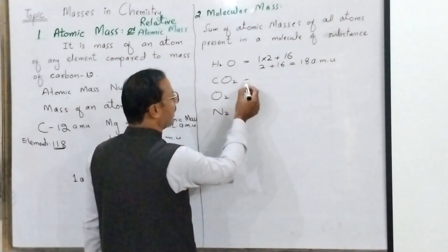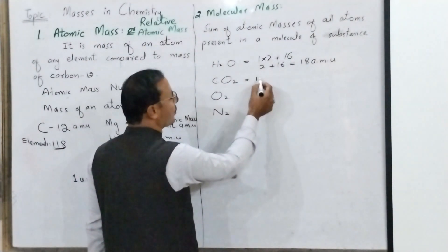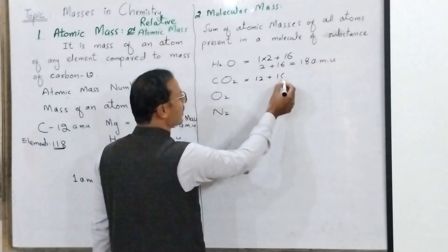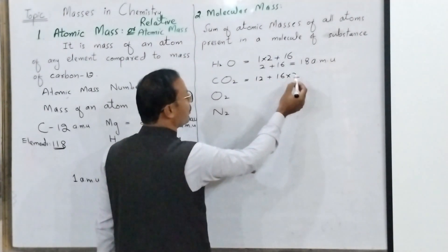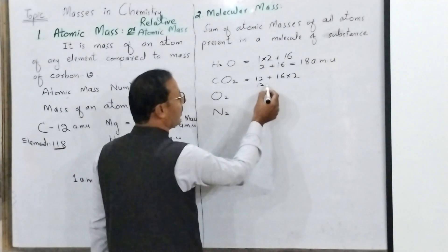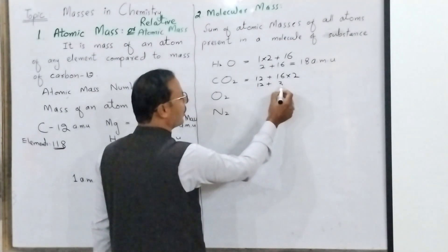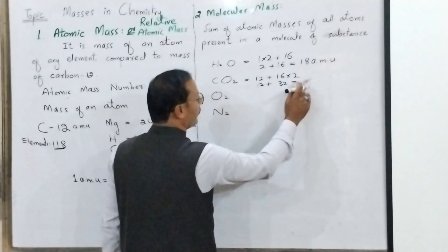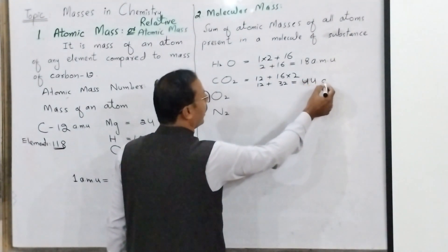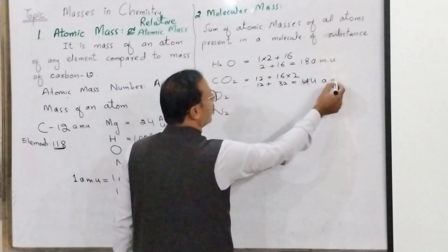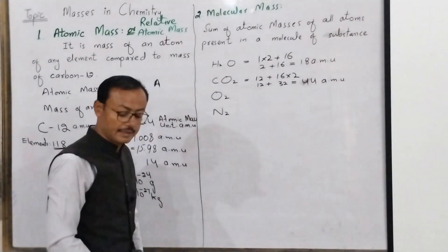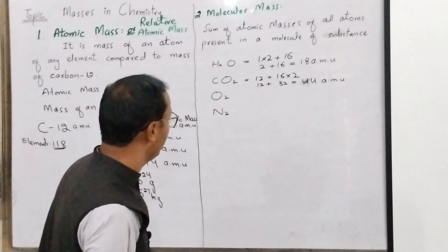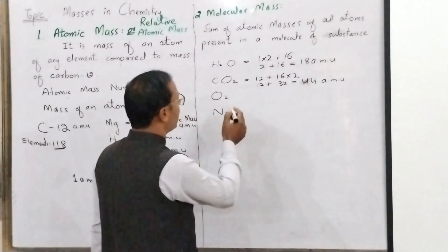Carbon dioxide: carbon's atomic mass 12, plus oxygen's atomic mass 16, multiply by 2 — that is 12 + 32 = 44 AMU. Carbon dioxide's molecular mass is 44 AMU. And for oxygen in molecular form: 16 multiply by 2 = 32 AMU.